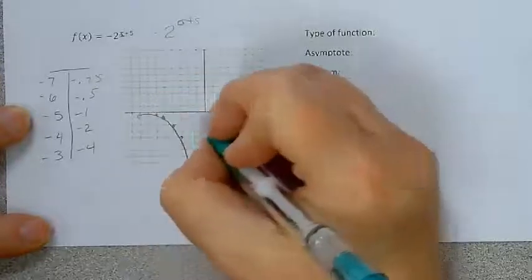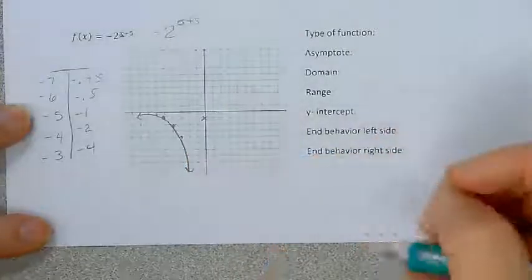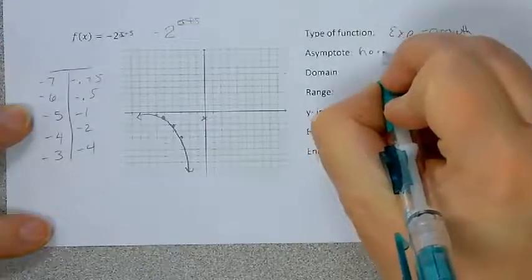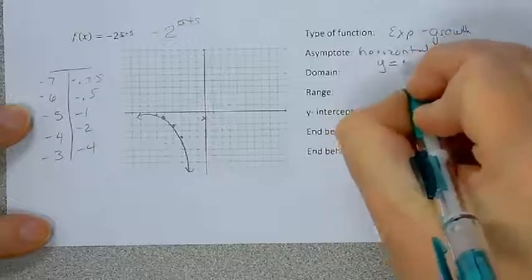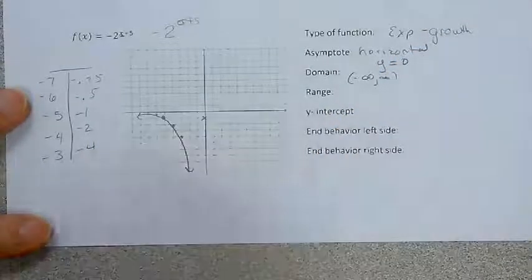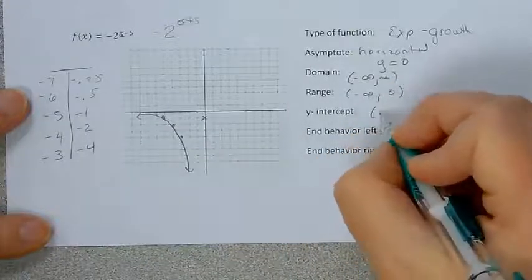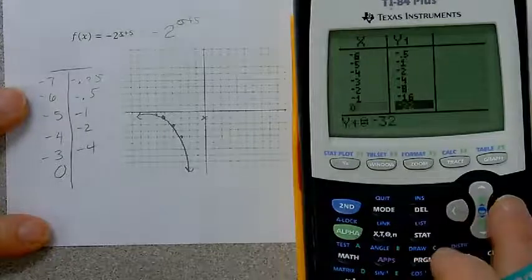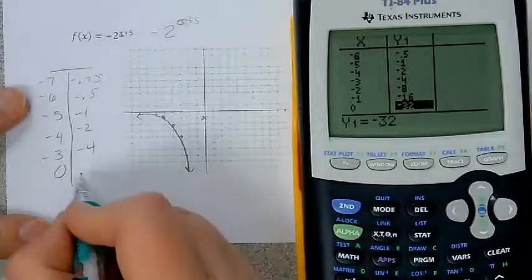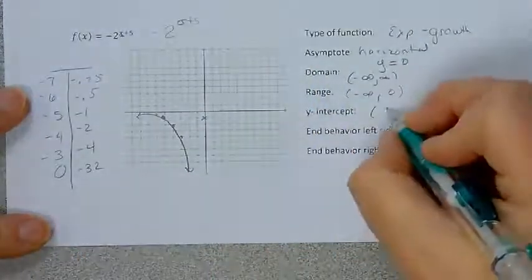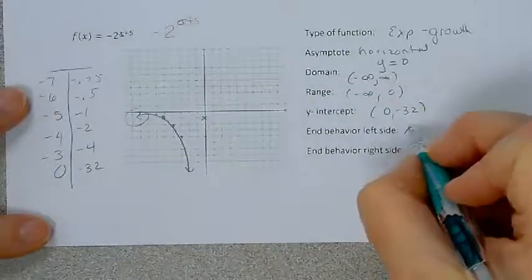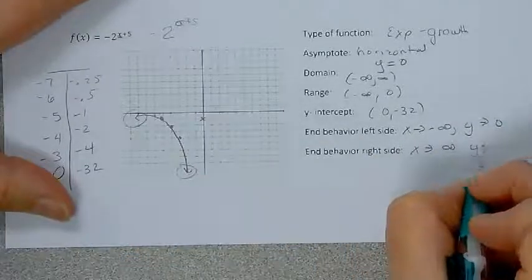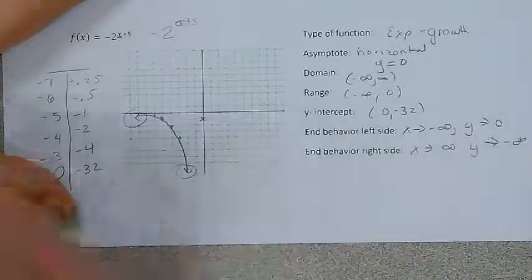Normally our y-intercept is easy to find, but this time it's been shifted left. This one again is an exponential growth. It has a horizontal asymptote at y equals 0. The domain is negative infinity to infinity. The range is negative infinity to 0. The y-intercept is where x is 0 — putting 0 in gives negative 32, because 2 to the fifth is 32, so it can't be seen on the graph. The behavior on the left: as x approaches negative infinity, y approaches 0. On the right, as x approaches infinity, y approaches negative infinity.